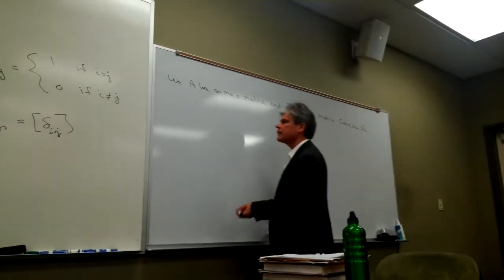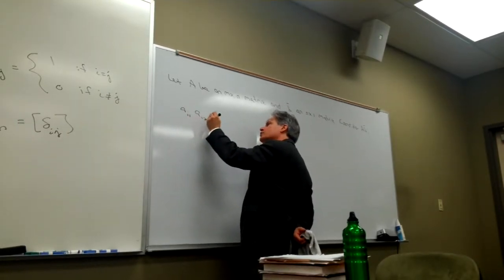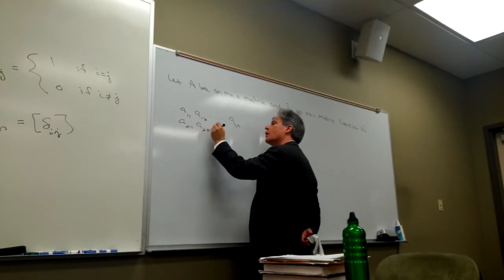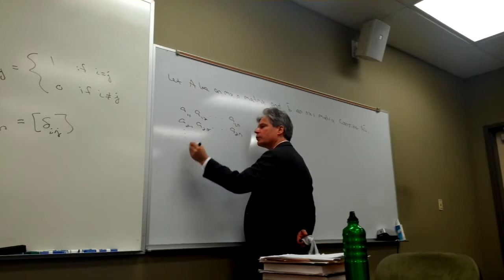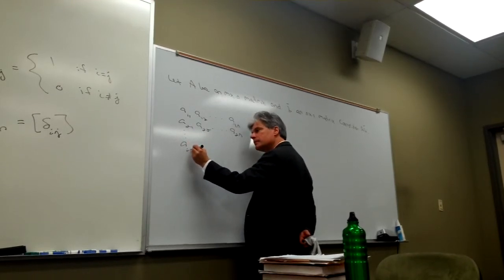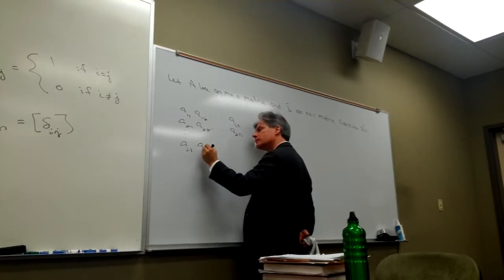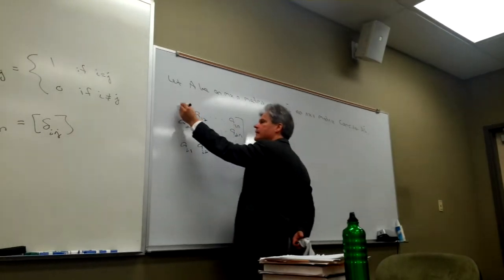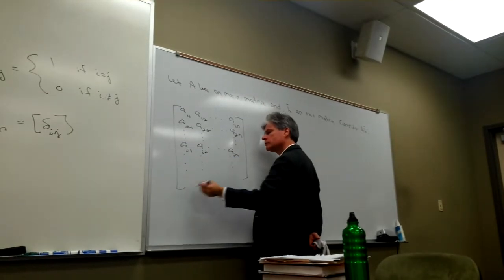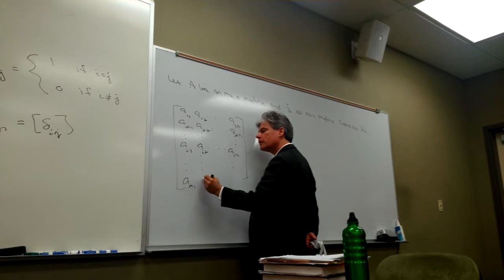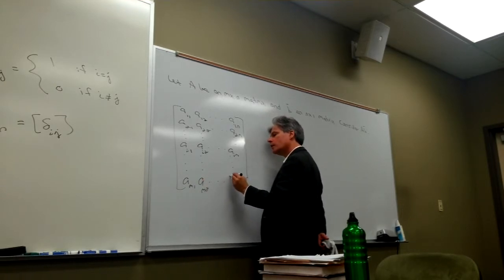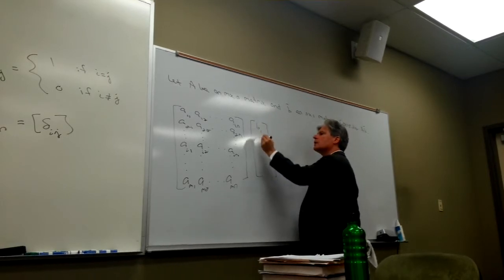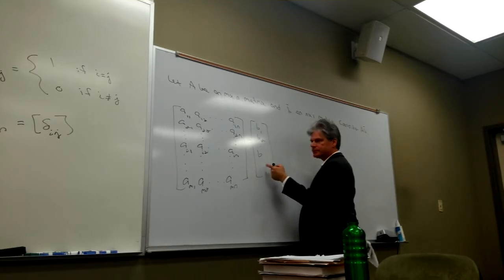Let's take a peek at what A looks like. It's going to be A-1-1, A-1-2, all the way up to A-1-N in the first row. The second row is A-2-1, A-2-2, all the way down to A-2-N. The arbitrary i-th row is A-i-1, A-i-2, all the way to A-i-N, down to the very last row. Let's look at B. If I write B as a column vector, it's N by 1, going B-1, B-2, all the way down to B-N.